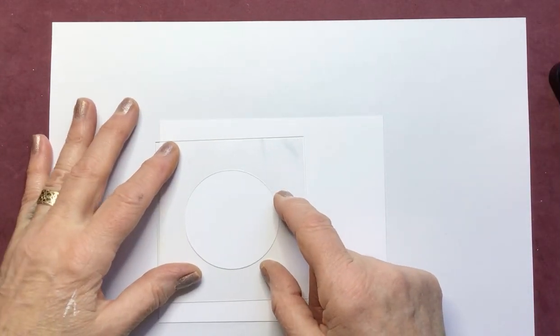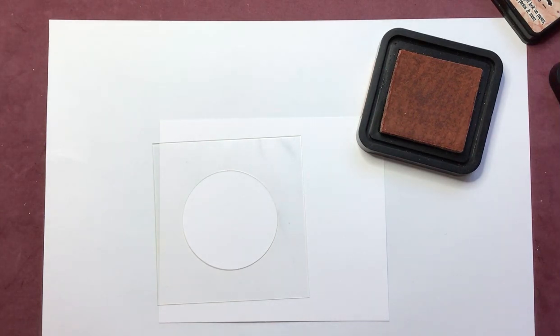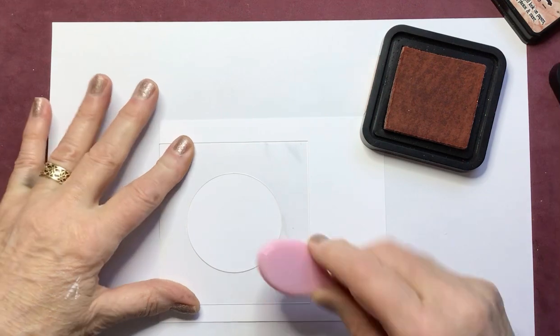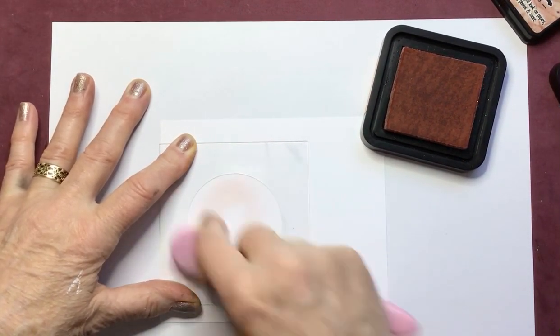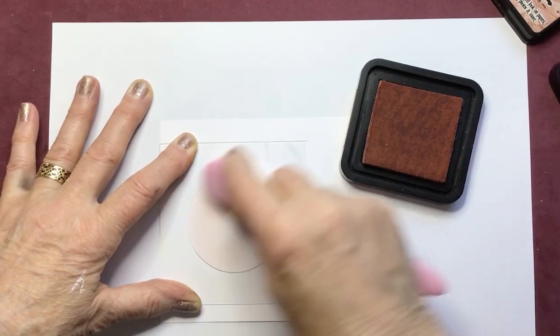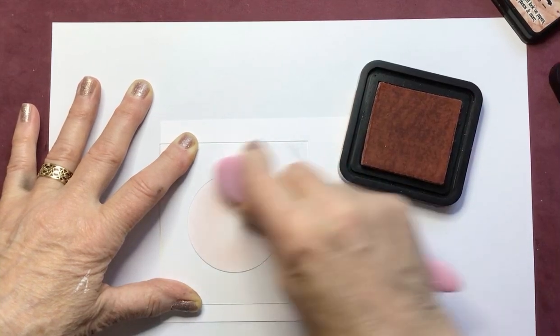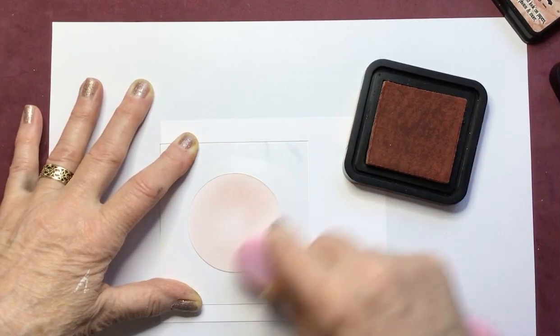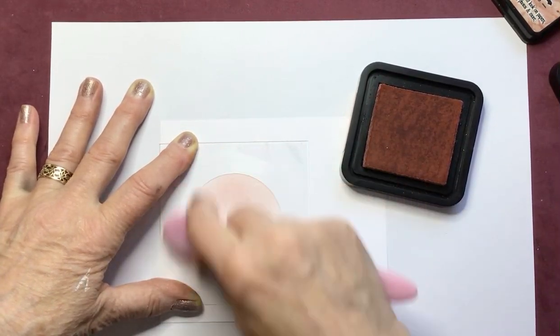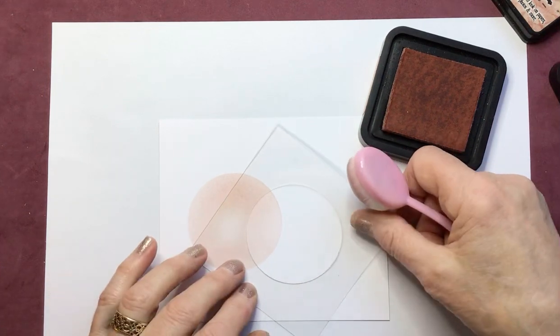Starting off with the negative space and Tattered Rose and a makeup brush, loading up my brush, popping the negative space down, hold it tight so it doesn't move. With a circular motion I'm not looking for loads of ink and there's sort of a spiral effect in the middle so you've got some white area in the middle of this moon image with a fade out towards the middle. There's moon number one, only doing two moons.